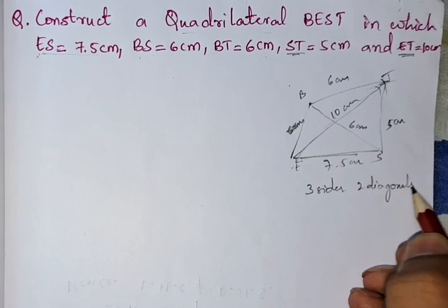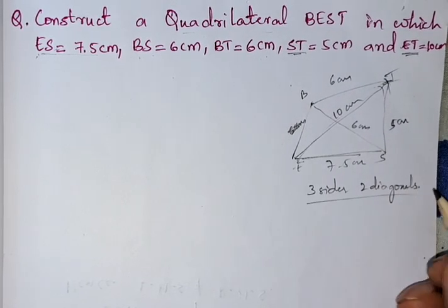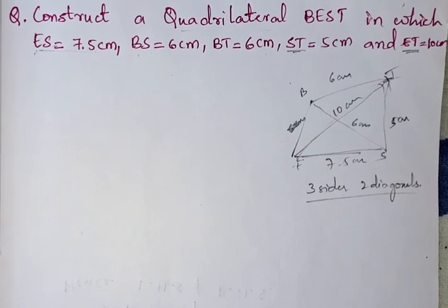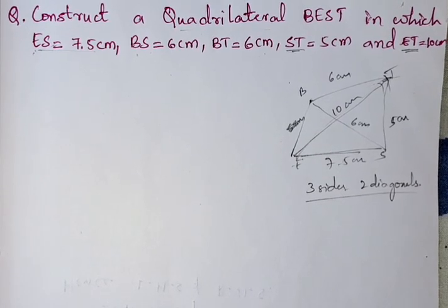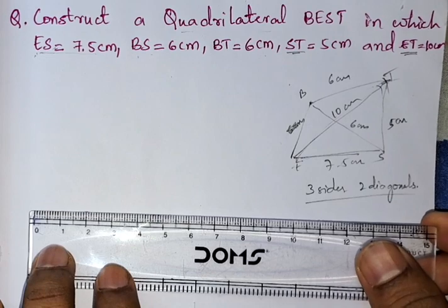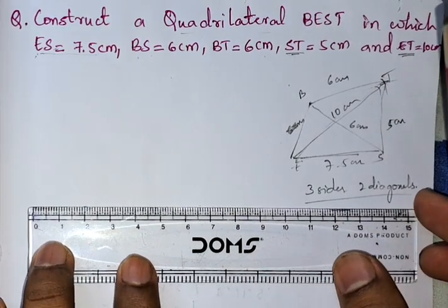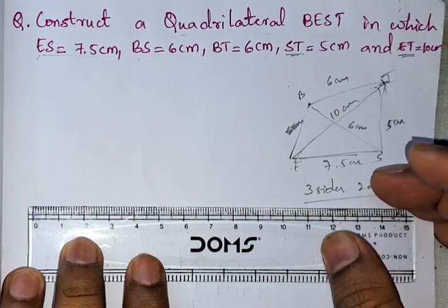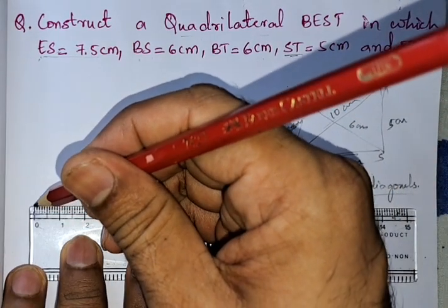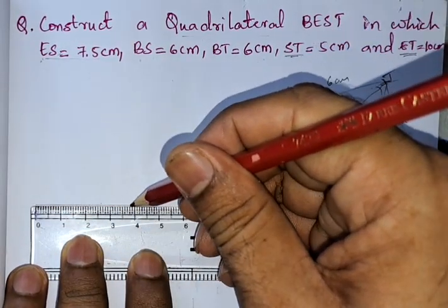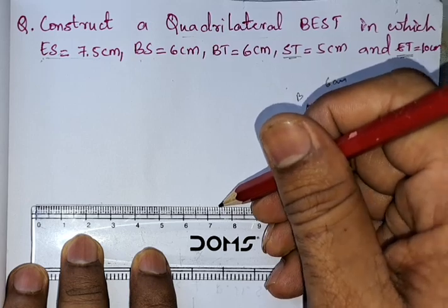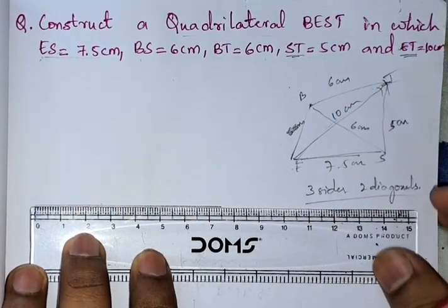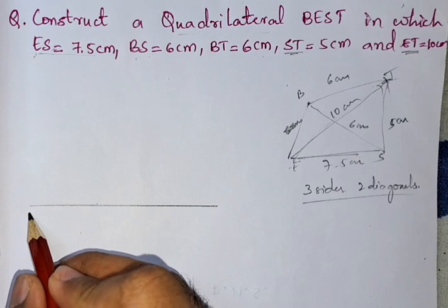Since we have three sides and two diagonals, we proceed with the construction. First, we draw the line segment ES using the given measurement. We draw ES from 0 to 7.5 cm, so we get ES = 7.5 cm.